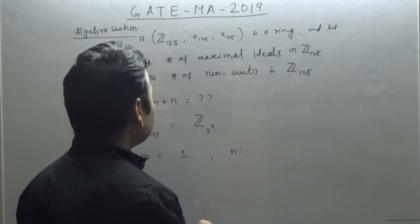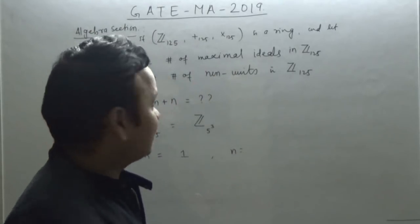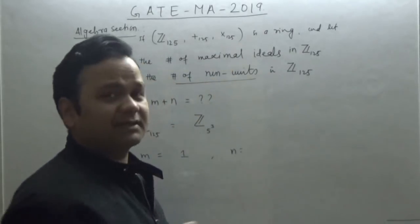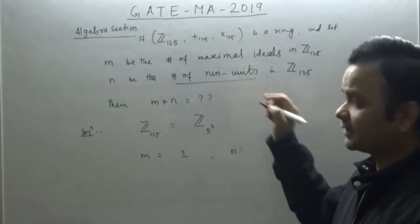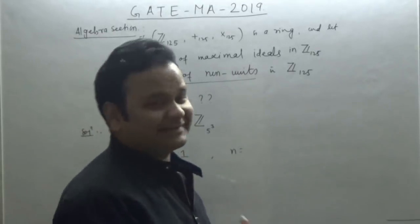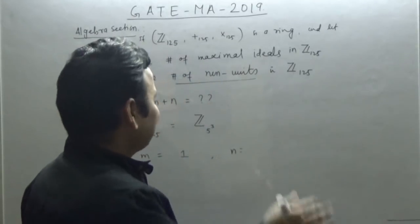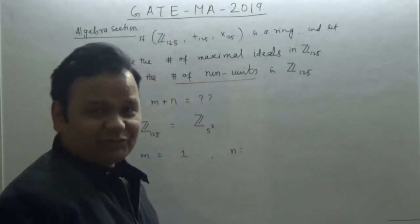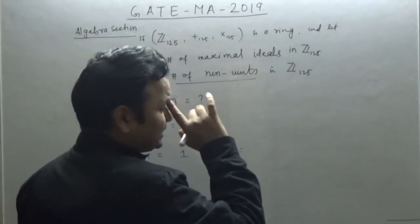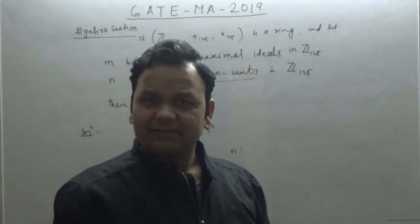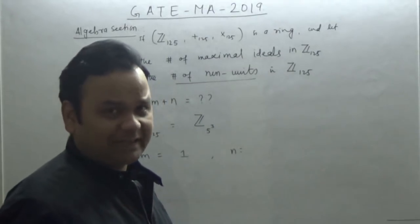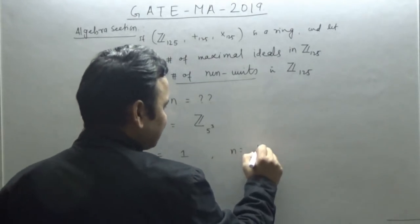Now what is N? N is the number of non-units in Z₁₂₅. Pay attention here — many students I've consulted said they thought about units when the question is asking for non-units. So if we know the total units, then: non-units = total elements minus unit elements.